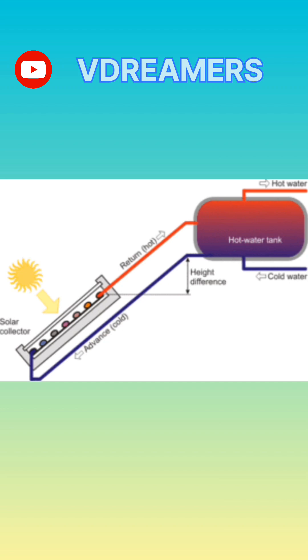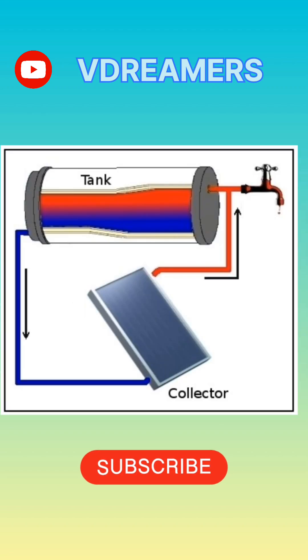Main components: one, solar collector, usually placed on the roof, it absorbs sunlight and converts it into heat.